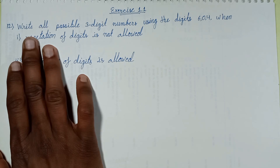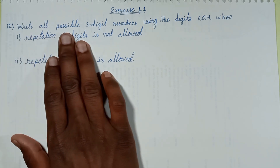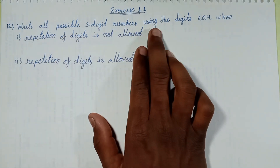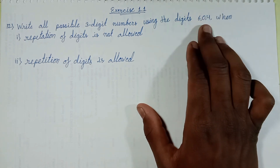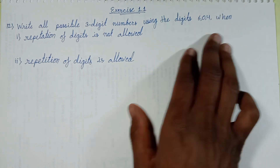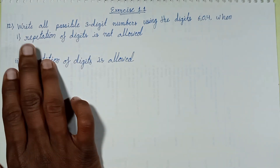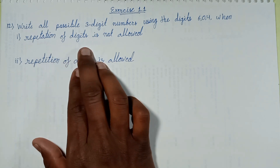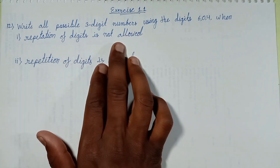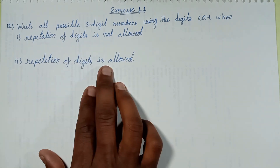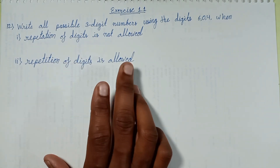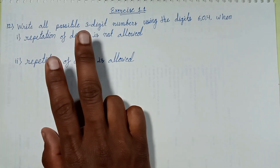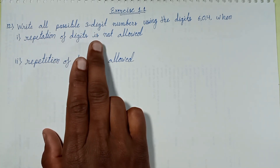Question number 12: Write all possible 3-digit numbers using the digits 6, 0, and 4, under two situations — repetition of digit is not allowed, and repetition of digit is allowed. Both situations will be solved one by one.